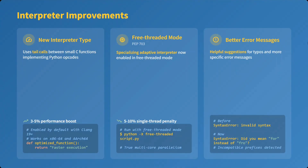In free-threaded mode, specializing adaptive interpreters are now enabled. The single-thread penalty of five to ten percent has been reduced. Better error messages have also come in, with helpful suggestions for typos — so if there is a syntax error, suggestions will appear indicating the correct word.